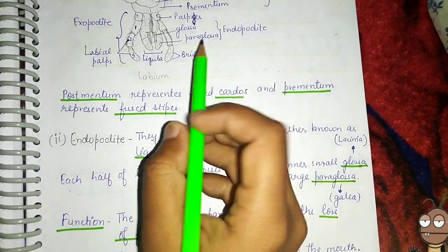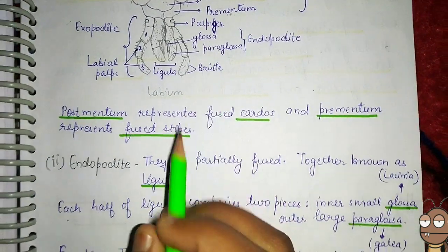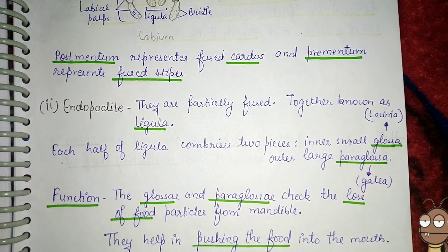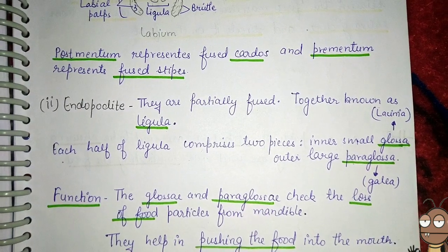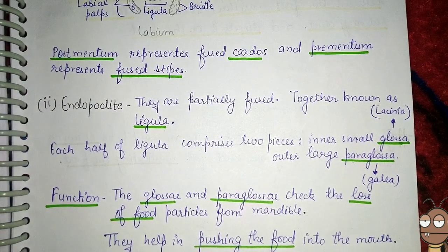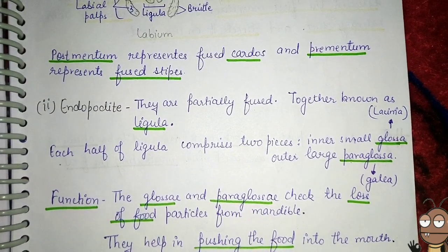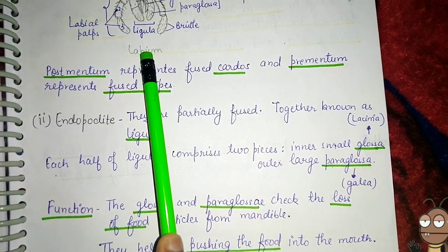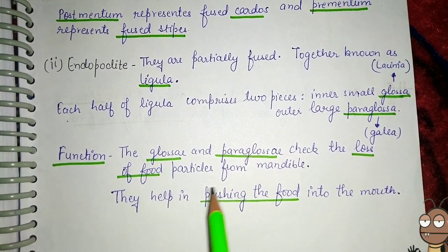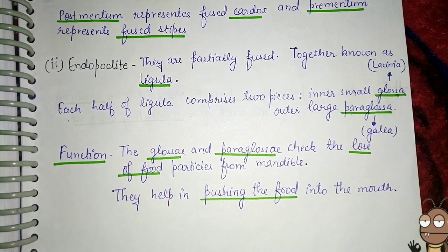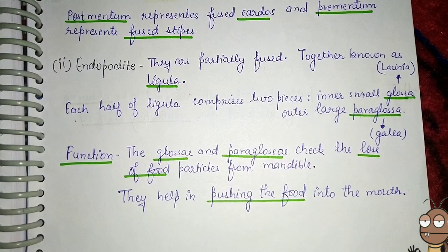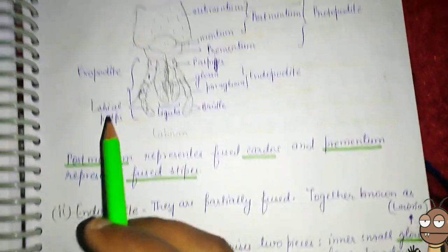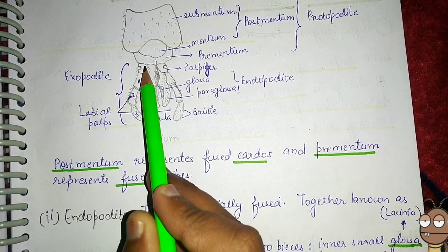The function of the glossa and paraglossa is to check the loss of food particles from the mandible while it cuts and masticates food. They also help in pushing the food into the mouth. These are the two main functions of the glossa and paraglossa of the endopodite of the labium.